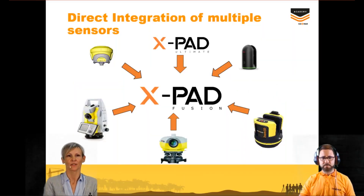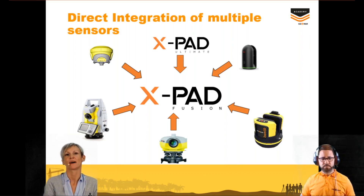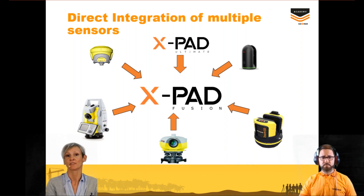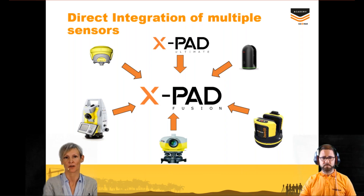What makes Expand Fusion special is the direct integration of multiple sensors. It allows you to directly integrate the GNSS solution, the TPS products, the digital levels, and also our Zoom 3D measuring solution for indoor and outdoor applications. It also supports the direct integration of BLK 360 and our Field Software Expert Ultimate.